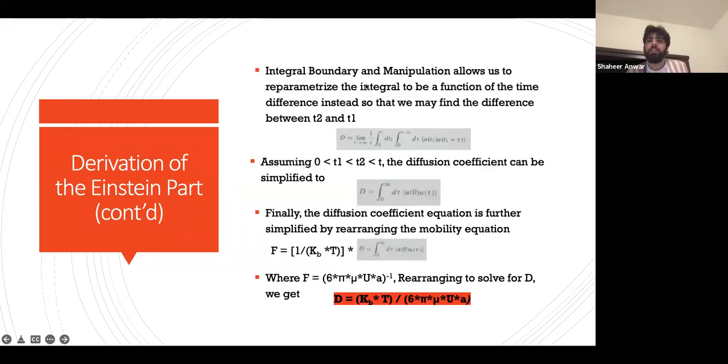Integral boundary and manipulation allows us to reparametrize the integral to be a function of time difference instead, so that we may find the difference between t_2 and t_1. Assuming 0 < t_1 < t_2 < t, the diffusion coefficient can be further simplified to the following.